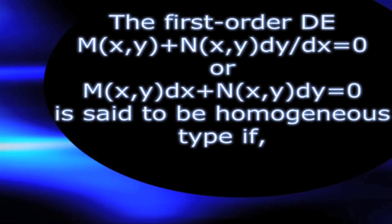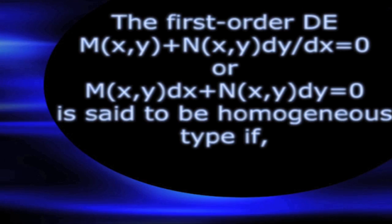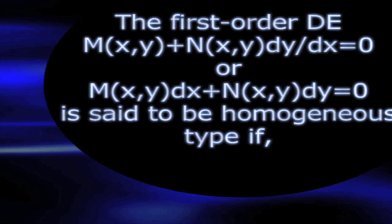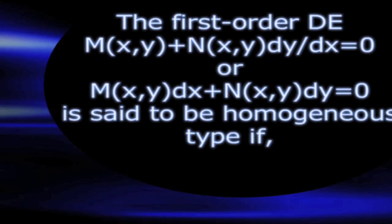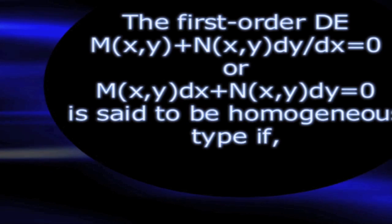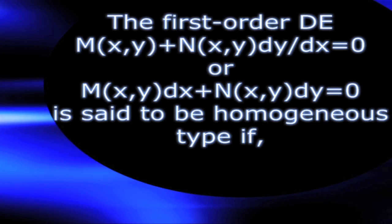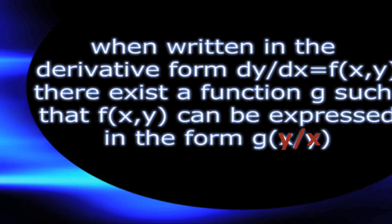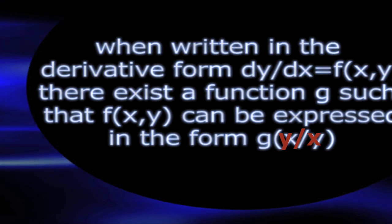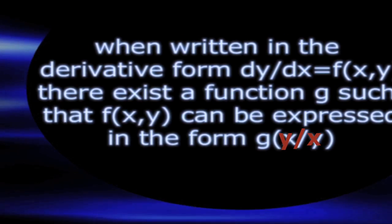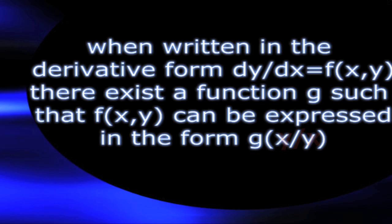The first-order differential equation M(x,y) + N(x,y) dy/dx = 0, or equivalently M(x,y)dx + N(x,y)dy = 0, is said to be of homogeneous type when written in differential form dy/dx = f(x,y) — there exists a function g such that f(x,y) can be expressed in the form g(y/x), a function of the single variable y over x.